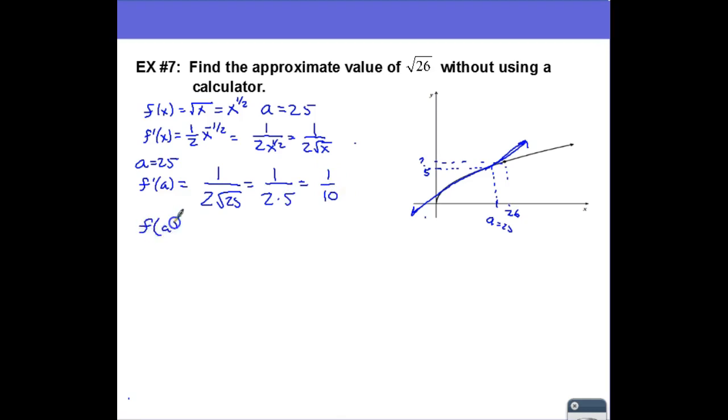Now the other thing I'm going to need to know here is what f(a) is equal to. So f(a) is going to be square root of 25, which is equal to 5.